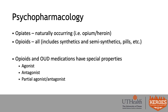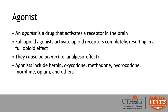Breaking down the special properties of opioids and MOUD medications, there are three main categories: agonists, antagonists, and partial agonist-antagonists. An agonist is a drug that activates a receptor in the brain. Full opioid agonists activate opioid receptors completely, resulting in a full opioid effect — primarily that analgesic, pain-relieving action. Examples of agonists include heroin, oxycodone, methadone, hydrocodone, morphine, and opium.